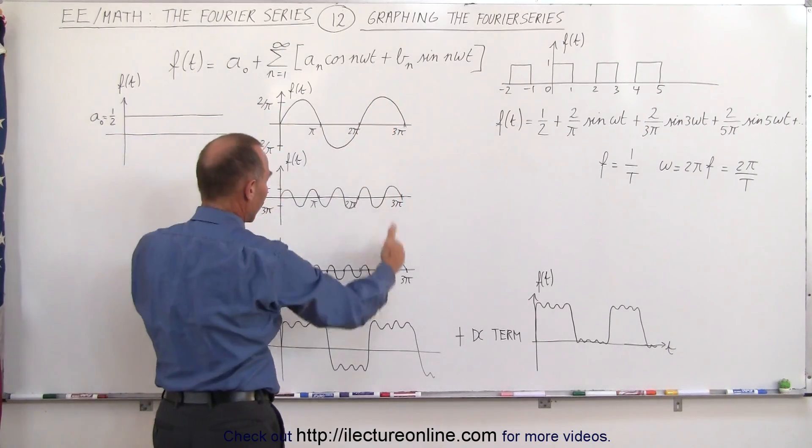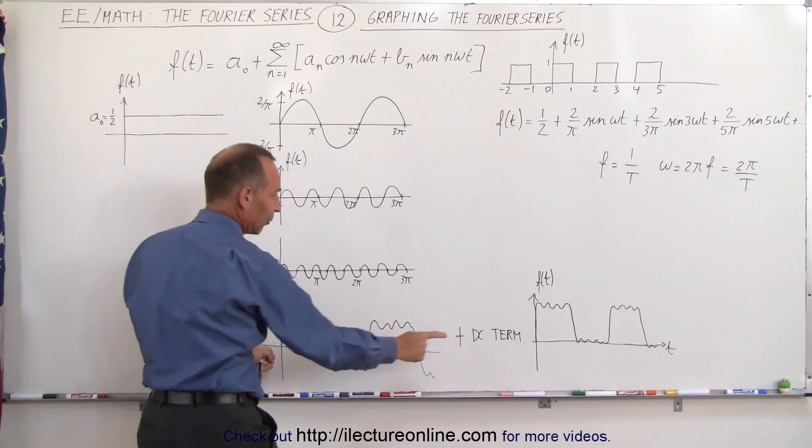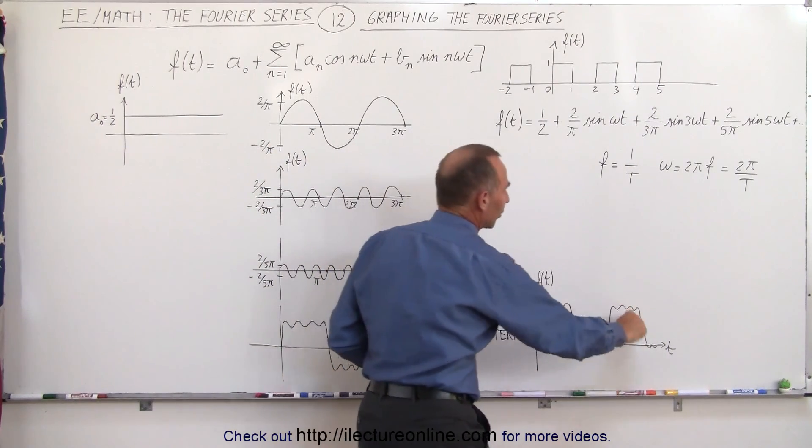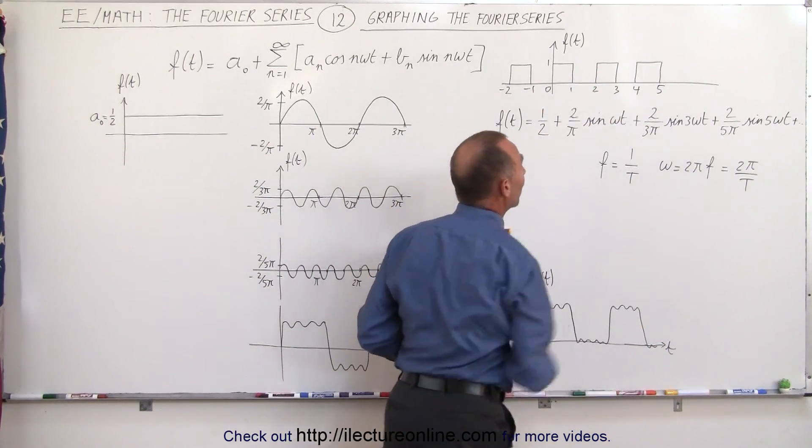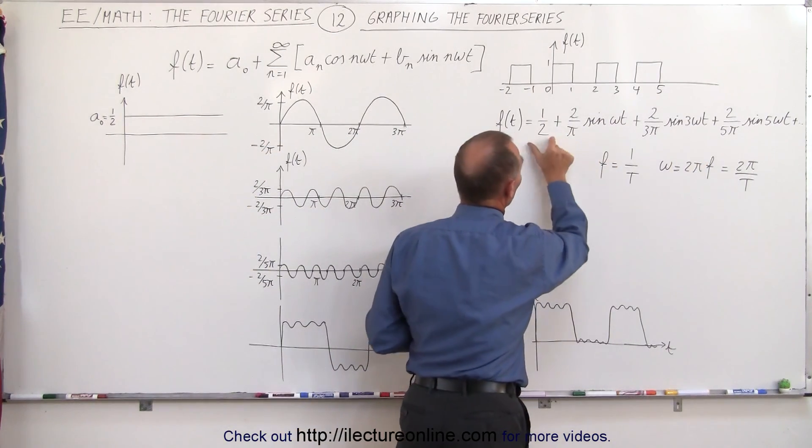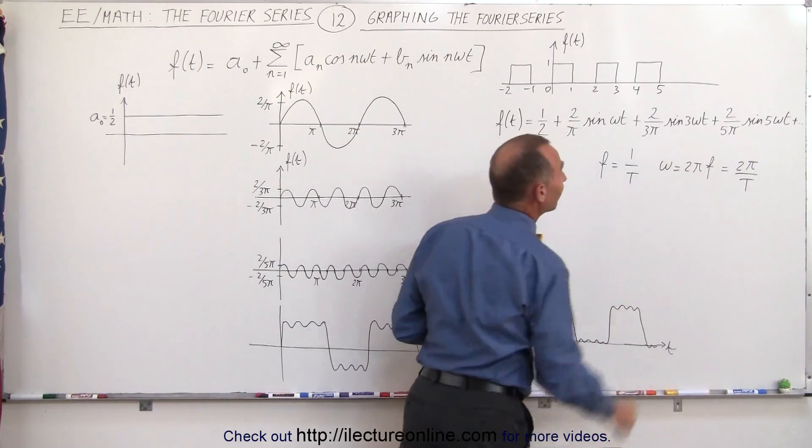So if we add all these together we get this and then if we add the DC term with it we lift it up by one half and we get this which is a very close approximation of what we have over there, only with the first four terms, the one DC term and the three AC terms.